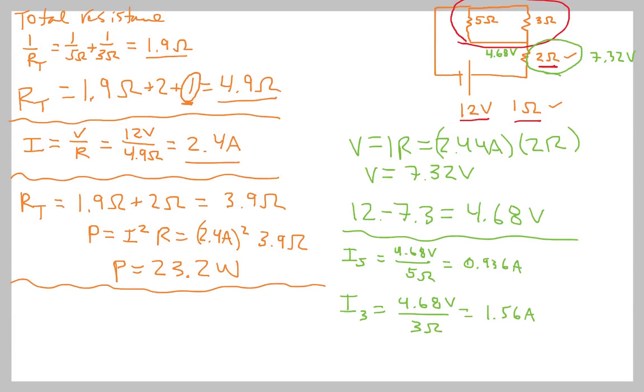And the final check is if we add these two together, we should get a number that is close to 2.4 amps, which is what we have there. It's slightly off because of a rounding error, and so we've solved for all parts of this circuit, and that's what it looks like.